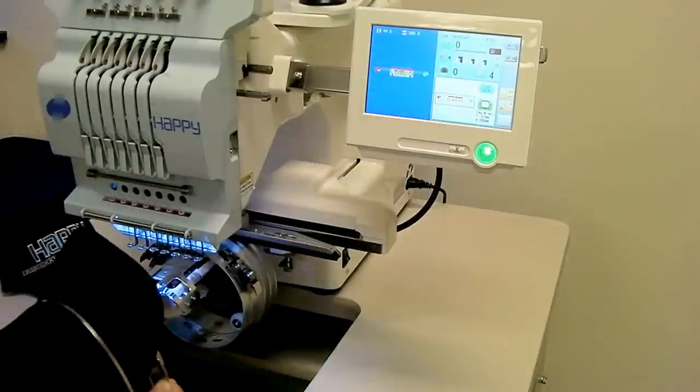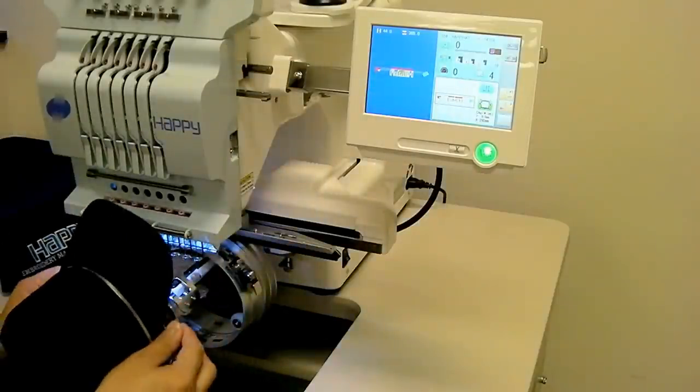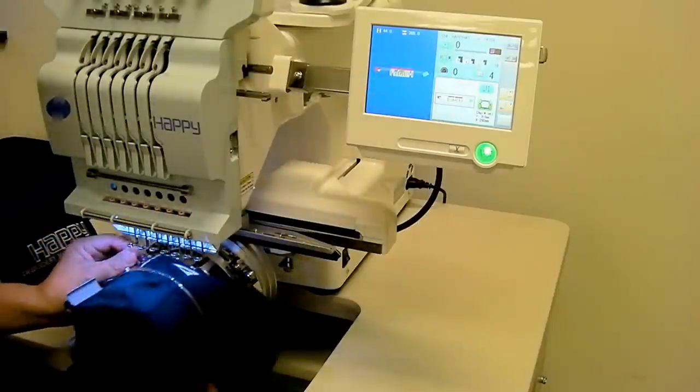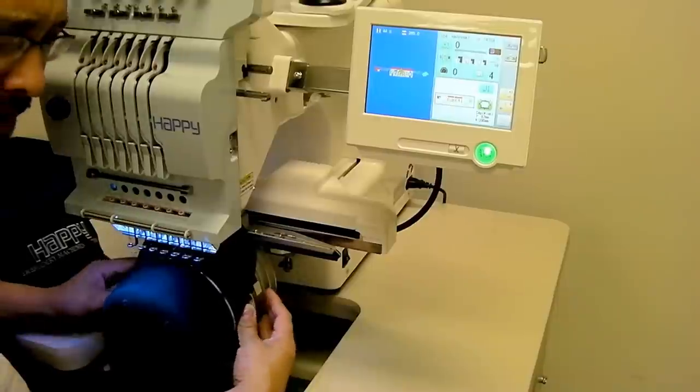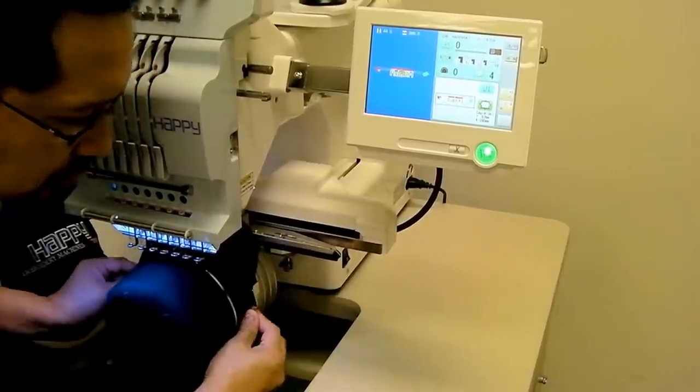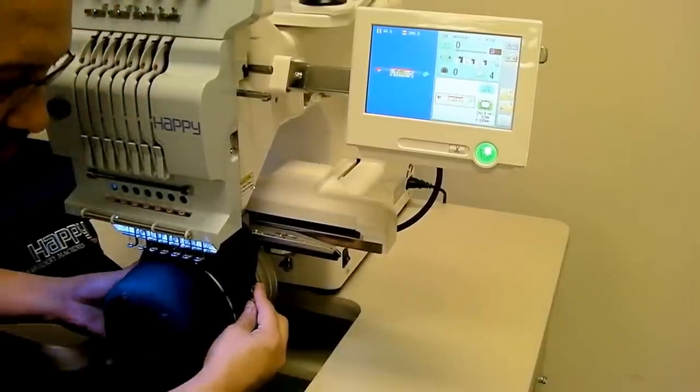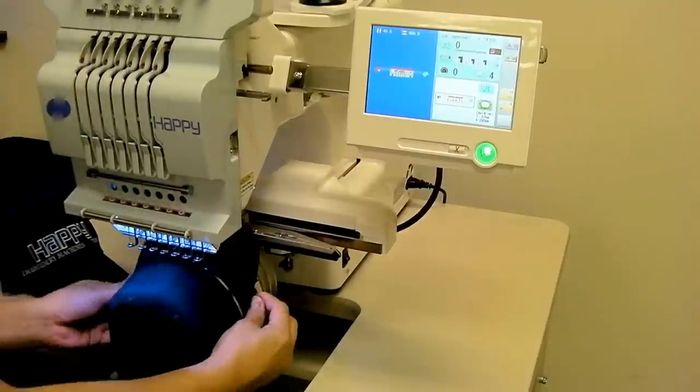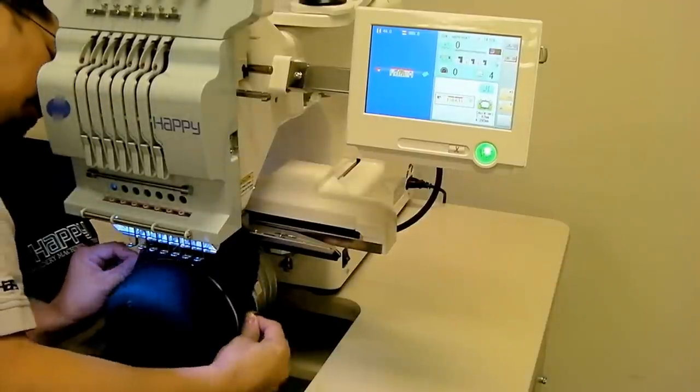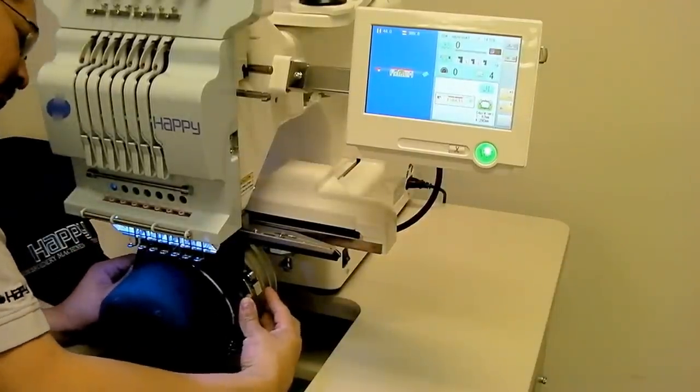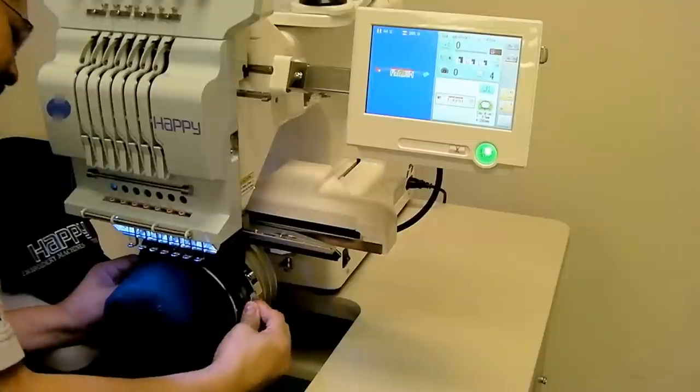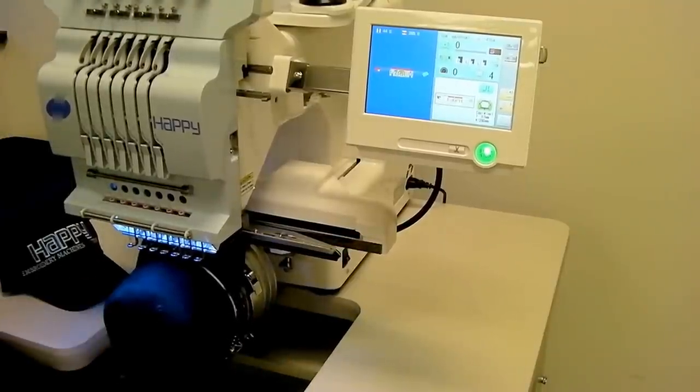So we simply put this onto the cap driver, swiveling the bill out of the way, locking it into the tabs, which hold the cap in very nicely and secure as we sew even at higher speeds up to its maximum cap sewing speed. So that's on there nice and firmly and all we have to do is press start.